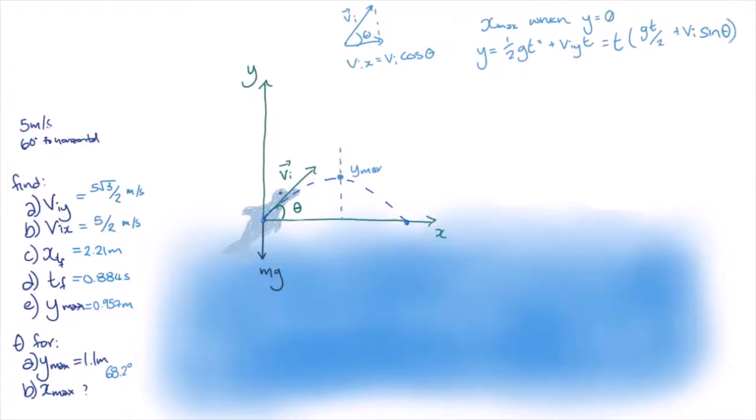Then, since y equals 0, we can divide both sides by t, and rearrange the final equation to find that t equals 2 times vi times sin theta over g.